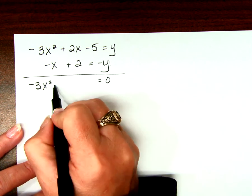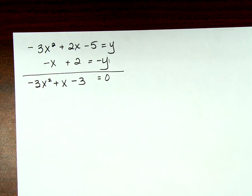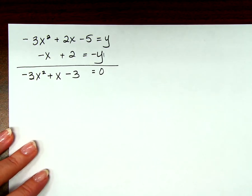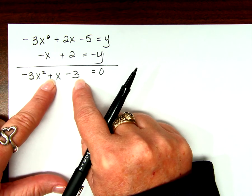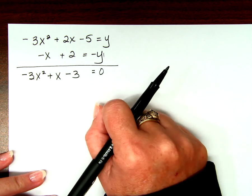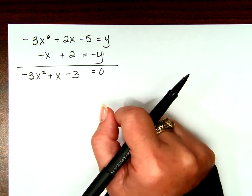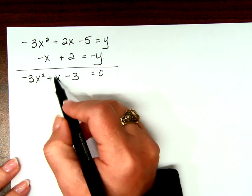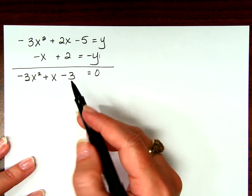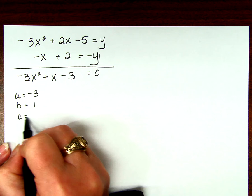We get 0 equals negative 3x squared plus x minus 3. If there's a greatest common factor take it out, but there's not in this case. AC is 9 and B is 1 — do you think anything multiplies to be 9 and adds to be 1? Me neither, so I can't factor it. I can't divide by negative 3 because that would give me a fraction. So the one way we know that works every single time — quadratic formula — where A is negative 3, B is 1, C is negative 3.